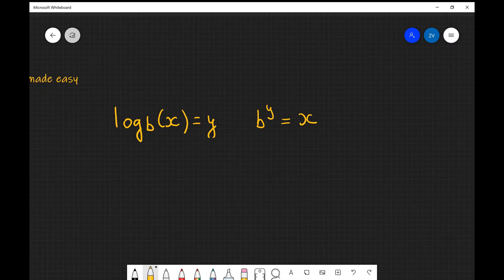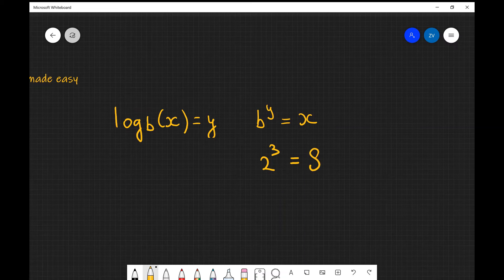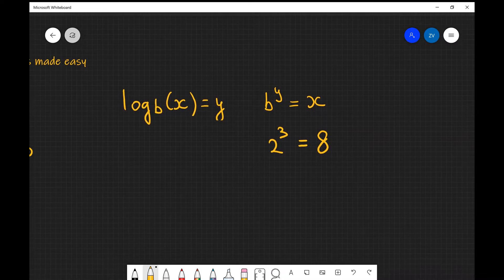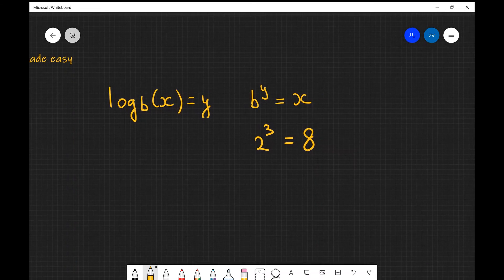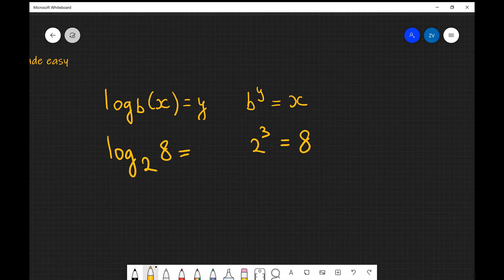So let's just put in some numbers to try and make sense of this. So let's say I have 2 to the power of 3 and 2 to the power of 3 is equal to 2 times 2 which is 4 times 2 which is 8. Now the logarithm of base 2 of 8 is actually going to give me the power that I've raised this to. So this is going to equal 3.